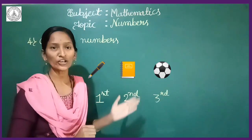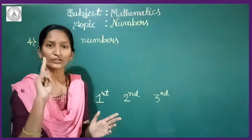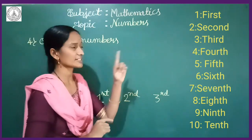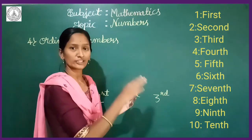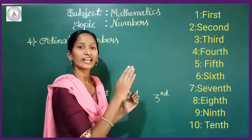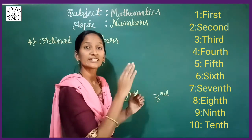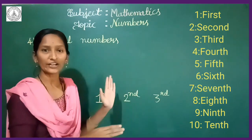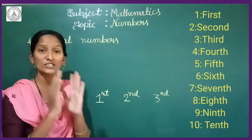Here is a chart of ordinal numbers from 1 to 10: first, second, third, fourth, fifth, sixth, seventh, eighth, ninth, tenth. These are all called ordinal numbers — they show the position.